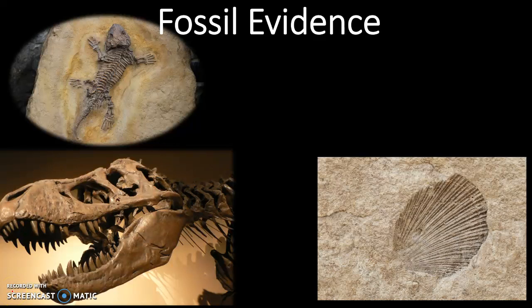Hey guys, Ru here, and today we're talking about fossil evidence to support the theory of evolution. If you take a look at these three different types of fossils, you'll see that these three fossils, or these three organisms that left these fossils, no longer exist today, or their species has gone extinct.